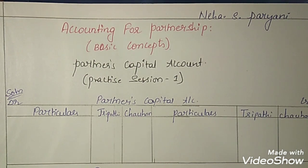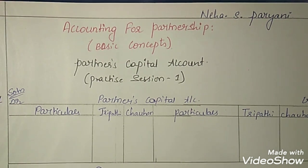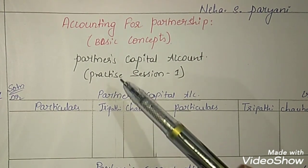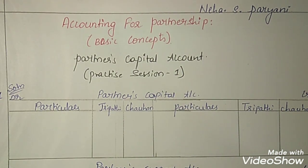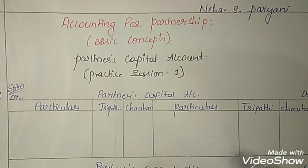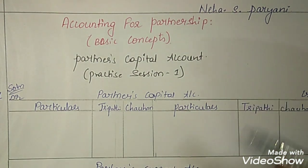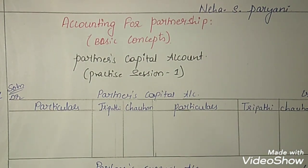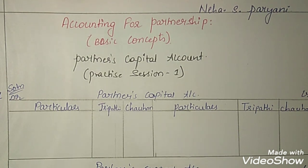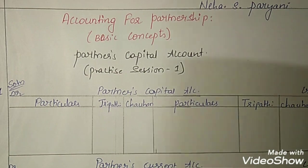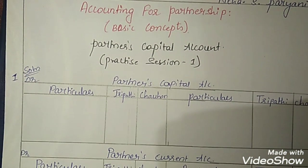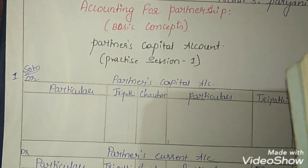In partnership, we have four to five different chapters; the first one is the basic concepts chapter. Today's topic is partners capital account. We already have a detailed explanation video of this topic on my channel where we have totally discussed this in detail — the concept, the format, and the concepts relating to partnership. In the practice sessions, we are going to solve all the textbook problems. I am referring to the textbook from NCERT board.